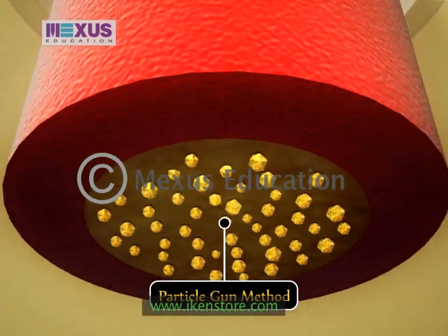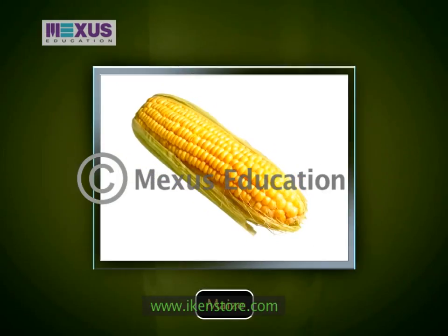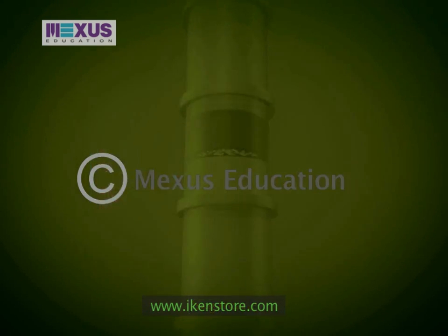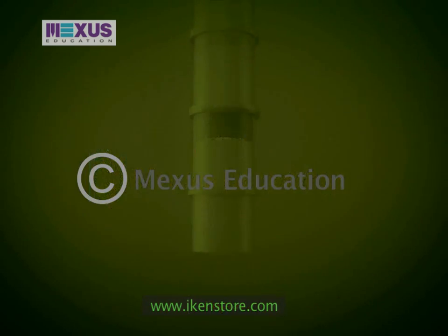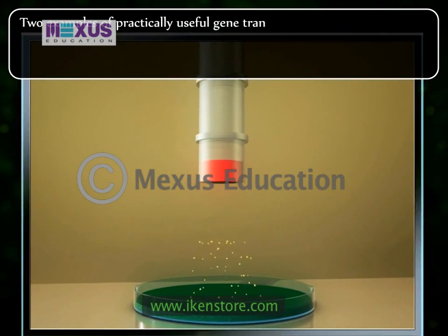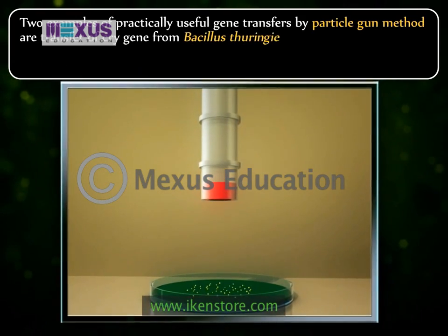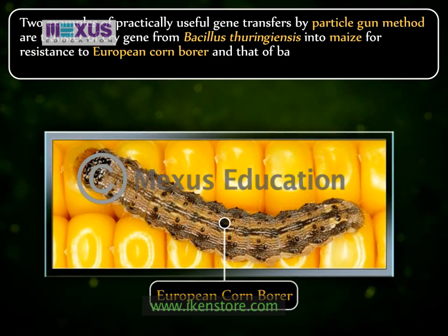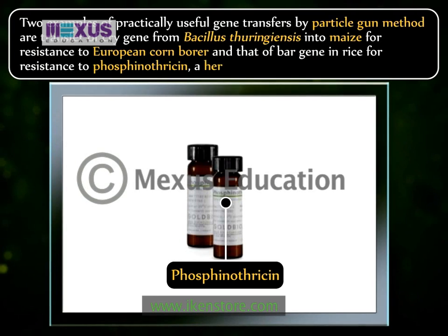The particle gun method has been used to produce stable gene transfers in cotton, maize, rice, sorghum, soybean, sugar cane, tobacco, wheat, papaya, poplar, etc. Two notable examples of practically useful gene transfers are: the transfer of the cry gene from Bacillus thuringiensis into maize for resistance to European corn borer, and the transfer of the bar gene in rice for resistance to phosphinothricin, a herbicide.